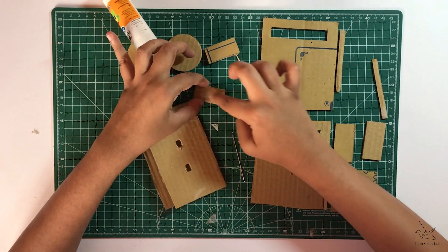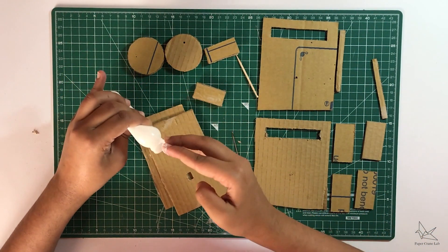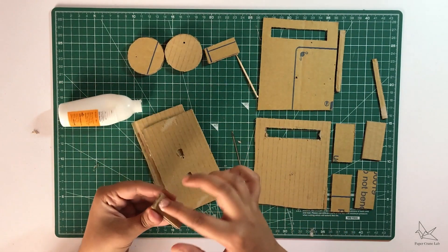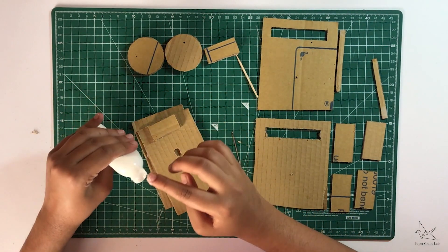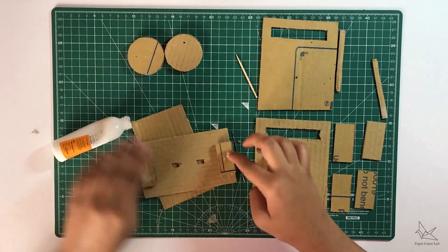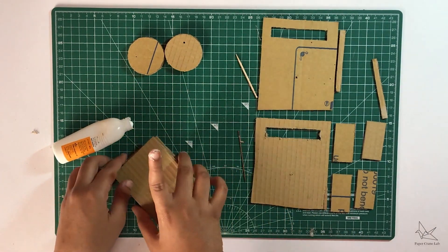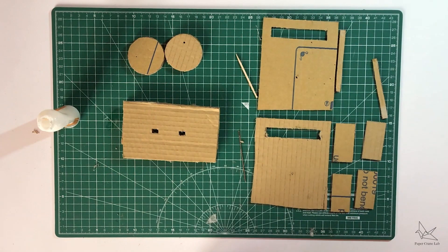For that we're going to use these two rectangular stacks that we just made. We're going to be sticking them between the two rectangles. So now we have the top part ready and we have the two discs ready.